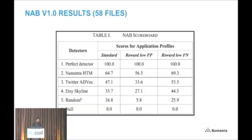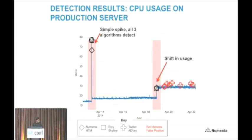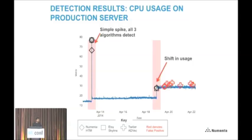Looking through some results gives insights into the challenges. On a CPU usage dataset with two anomalies: on the left, a very easy spike anomaly that all three algorithms detected. On the right, a shift in CPU usage — perhaps a configuration change or new software. HTM and Skyline both detect that shift early. Twitter doesn't detect it until much later, and keeps giving false positives afterwards as the new usage level becomes normal. Skyline actually does really well with no false positives afterwards. The Numenta detector gives a couple of false positives before adapting to the new normal.